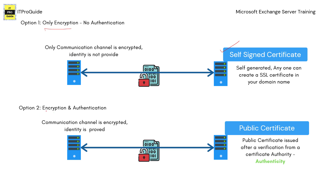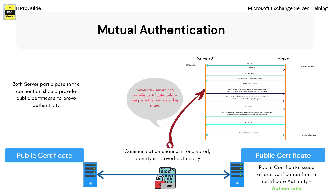If you don't have a public certificate and you're using a self-signed certificate, and if you only consider encryption, then a self-signed certificate is enough — it has a private key and public key so you can use it to encrypt and decrypt your communication. But if there is a demand for both encryption and authentication, then you have to present a public certificate, because a certificate authority has verified and issued that certificate to you.